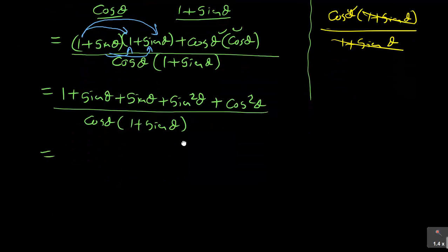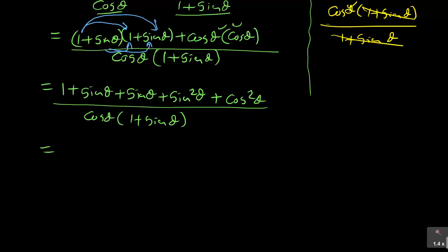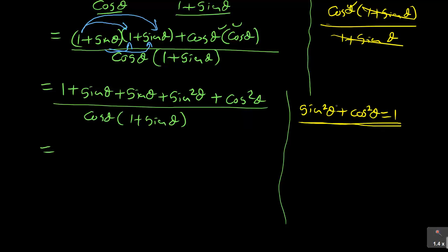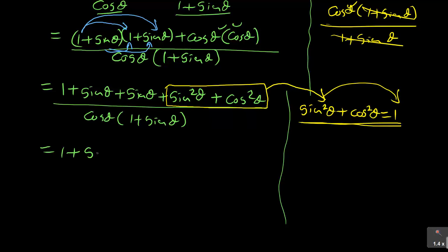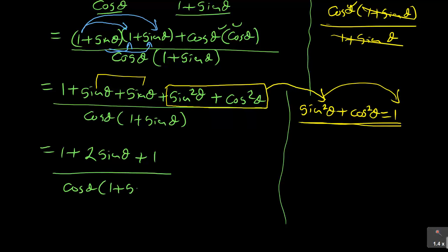Now, the next important thing to identify while working on this is the identity sin²θ + cos²θ = 1. Check my videos where I prove this identity, because sometimes they can ask you in an exam to prove it. You can see that identity appears here in the numerator, so you substitute it with 1. That gives you 1 + sin θ + sin θ over cos θ · (1 + sin θ).